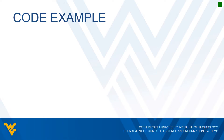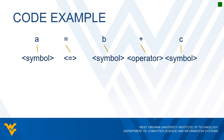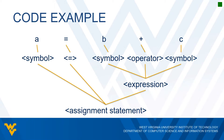The same thing happens with statements in a programming language. If a compiler is able to diagram a statement, such as 'A equals B plus C', then it concludes the statement is structurally correct. We get the tokens: A is a symbol, the equal sign is an equal sign, B is a symbol, the plus sign is an operator, and C is a symbol. An expression is defined as a symbol, an operator, and then another symbol. An assignment statement is defined as a symbol, an equal sign, and then an expression. So this is in fact a valid statement in our language.